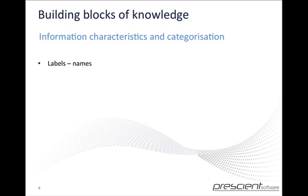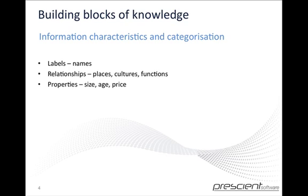These items will also have various characteristics that define them. They can be properties, such as material, age, weight, etc. They can also be relationships, which are places, cultures, functions — the bits of information surrounding an item that allow us to place it and reference it within our understanding of our environment. Whereas properties, like age, price, size, material, etc., are more attributes of the item, regardless of how the relationship may vary from culture to culture and place to place.